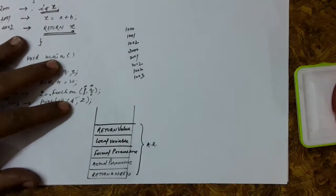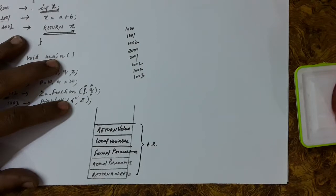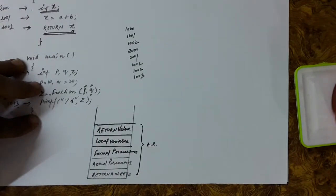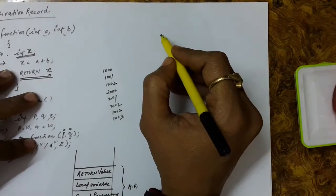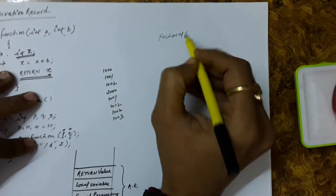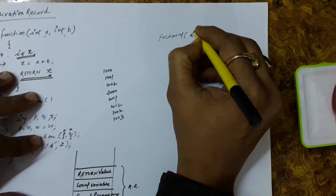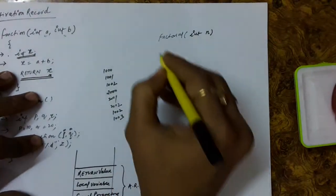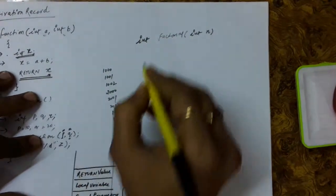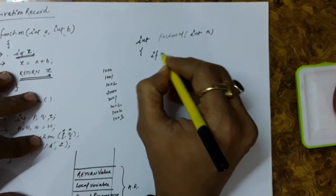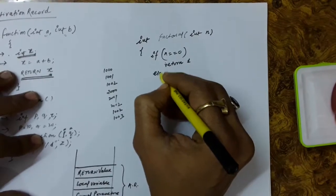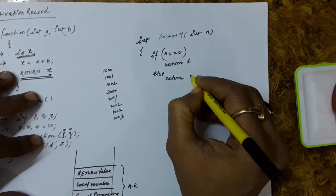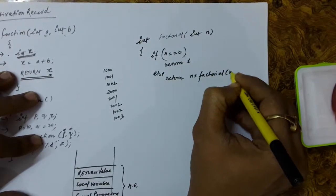What is the advantage of storing this activation record? Let us say we are calling a recursive function. Let us say factorial is a recursive function. We define this factorial function, which finds out the factorial of n and returns an integer value. If n is 0, we return 1. Otherwise, we call this function: return n into factorial of n minus 1.